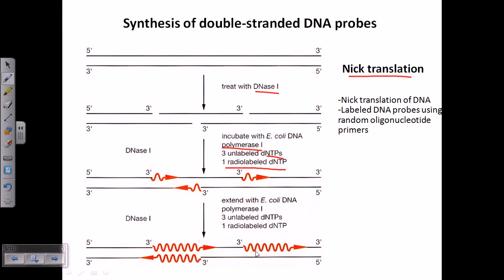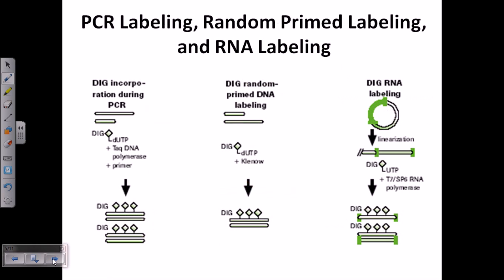After extension, we again treat with DNase I, and we get cleaved segments of the DNA that now carry the radio-labeled probe. We can take this as a probe and attach this single-stranded DNA to our desired DNA which is in the gel. After transferring the DNA from the gel to the membrane, we apply this probe, which attaches to our desired gene due to complementary base pairing.